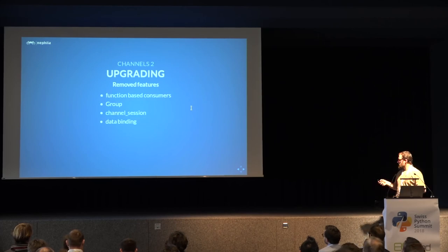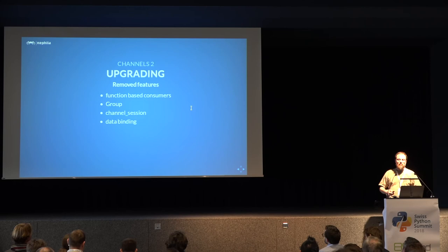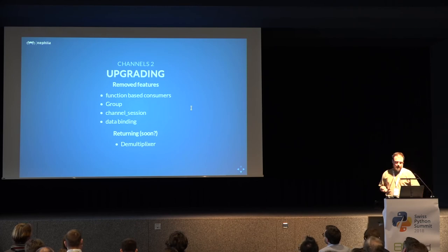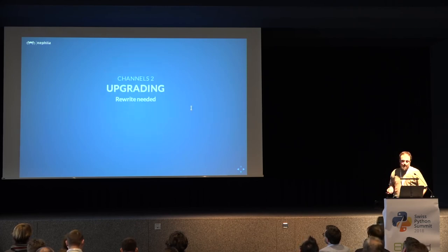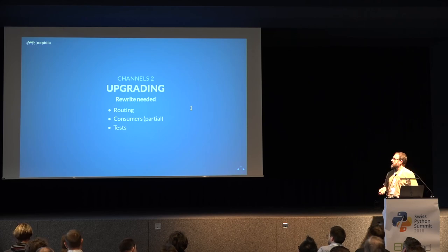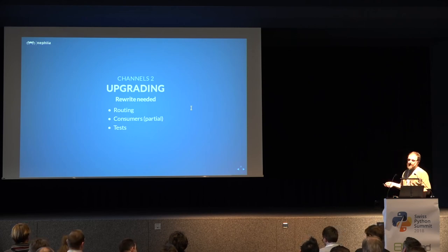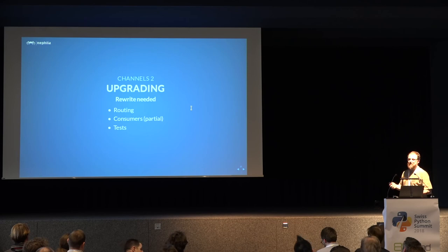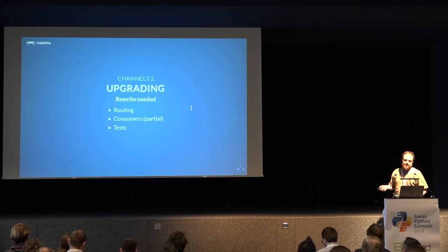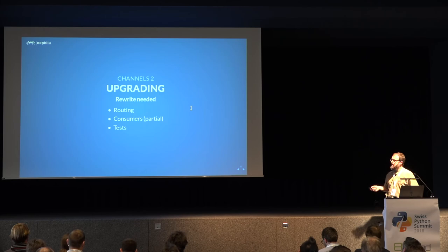Being a completely new rewrite, a lot of features have been removed. Many will not come back; some haven't really gone away — like the group concept, which is still there even if the group class is not. Some features, like the multiplexer, will hopefully return soon. As for migrating Channels 1 code — it's not too hard, because the complex part where you write the consumers has remained almost the same. You do have to rewrite your tests completely because testing works completely differently, and routing is a bit more complex, but not dramatically so.